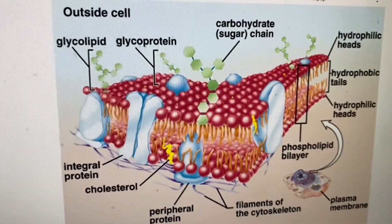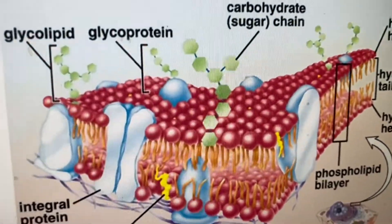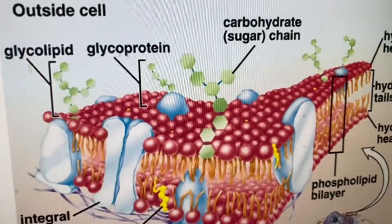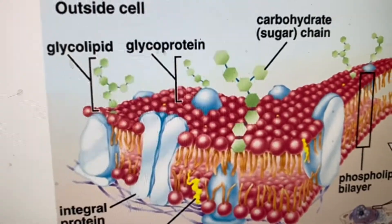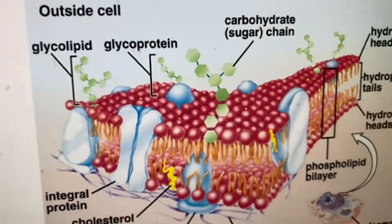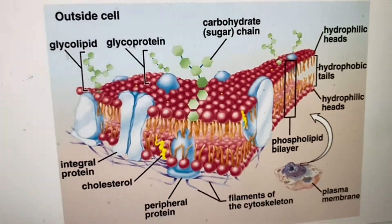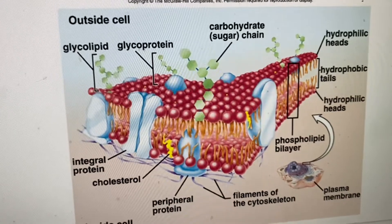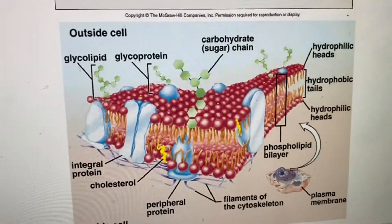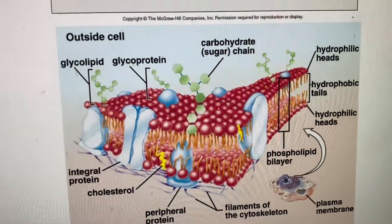If you paid attention last week, you know that antigens are the little proteins that stick out the top that give cells their ID. And that's what lets our immune system recognize foreign invaders.